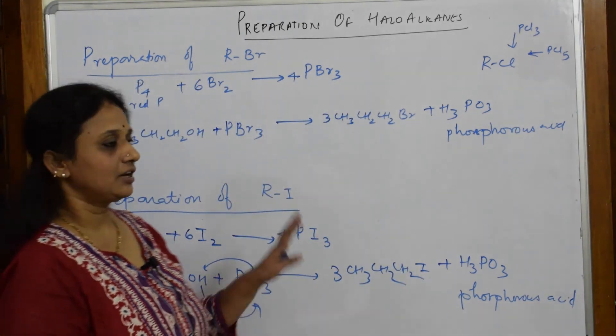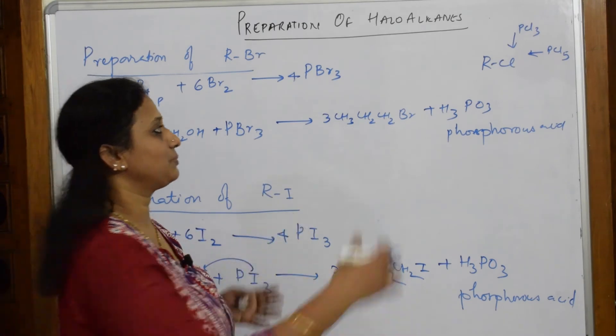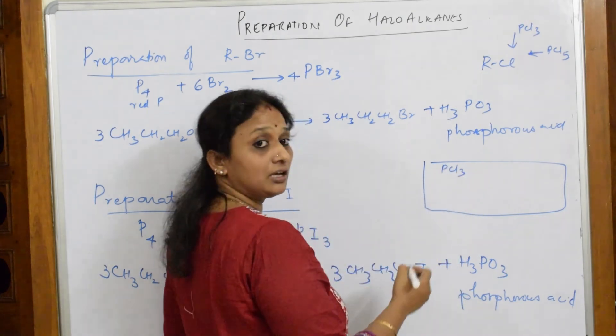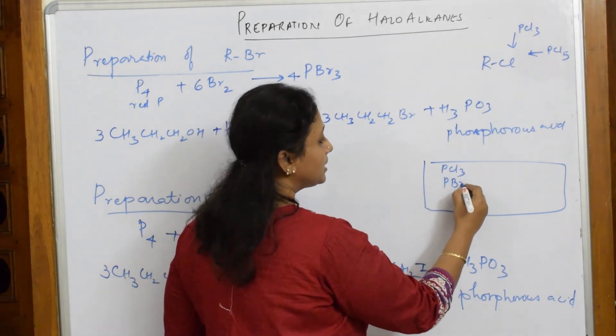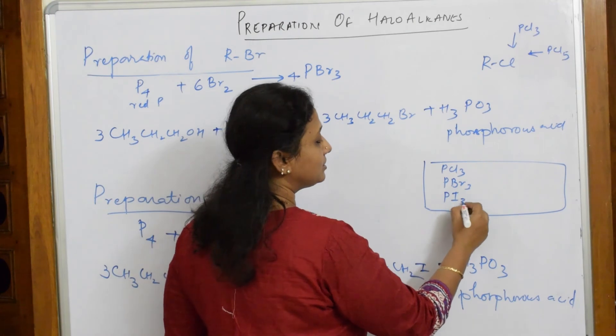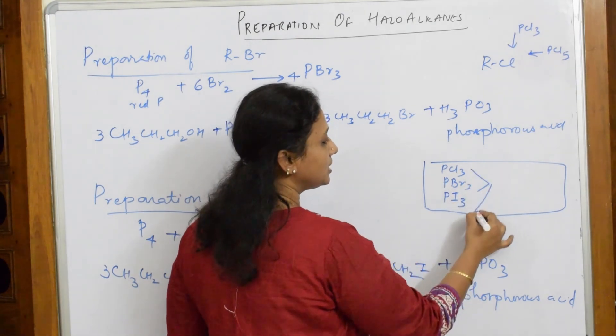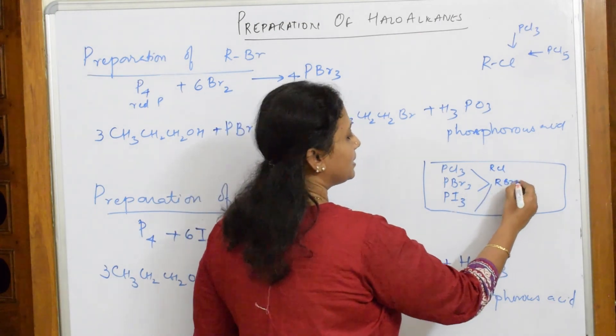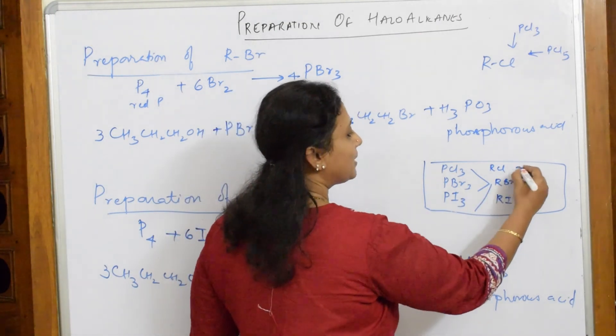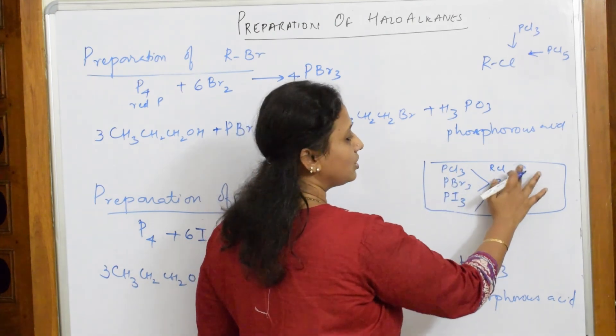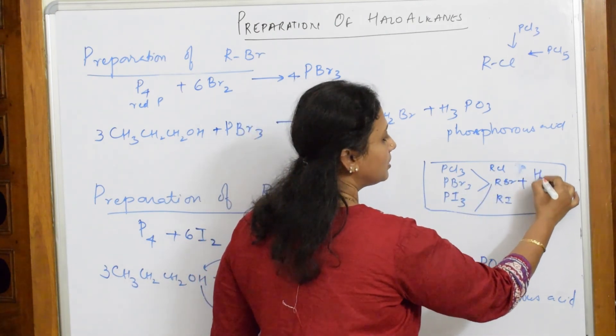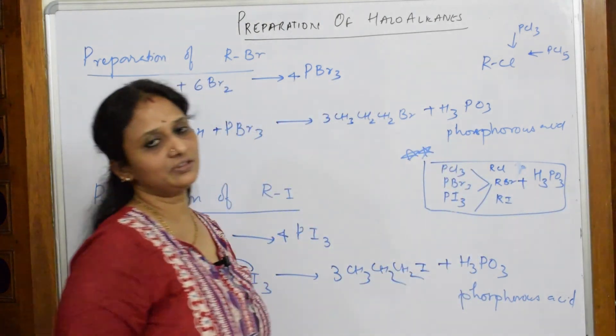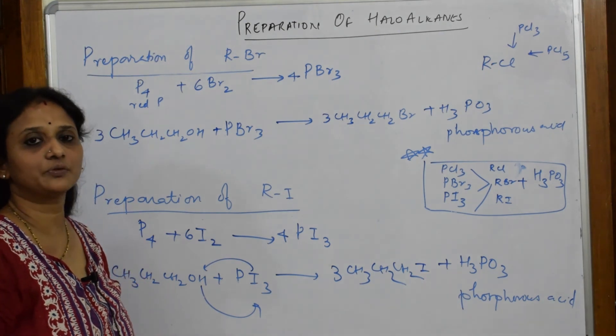So the conclusion is, let me conclude this. Remember whenever you take PCL3, PBR3, or PI3, all the 3, for PCL3 you will get RCL, for PBR3 you get RBR, for PI3 you get RI. Plus, all the byproducts for all the 3, the main important byproduct is H3PO3. Remember this. Any alcohol given, it's easy for you to just solve this. Thank you for watching.